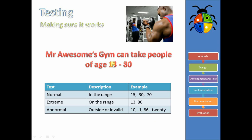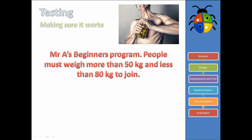Often you're going to be given a clue or a situation and you're going to have to come up with examples to illustrate your points. So your turn — give it a go. Mr. Awesome's beginner program is for people who want to build muscle. People must weigh more than 50 kilograms — if they're too light, maybe it's dangerous — and they must weigh less than 80 kilograms. So between 50 and 80 kilograms to join this program. What are the three types of test data? Can you give me at least one example for each? Pause the video and write down your answers.